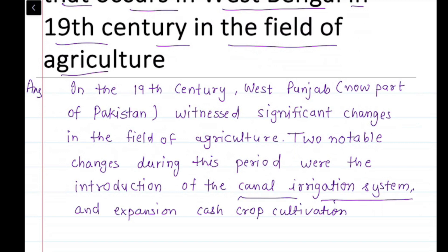And the Canal Irrigation System — the water that comes in the canal comes from rivers. So they started using that water for irrigation, for farming the fields. So these are the two main changes that happened in the 19th century.